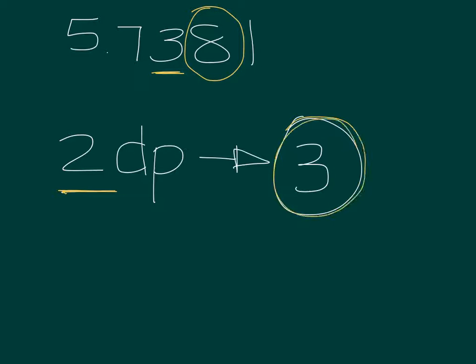Now, certain numbers have enough power to push a number up. Certain numbers do not have enough power, and the number stays the same.